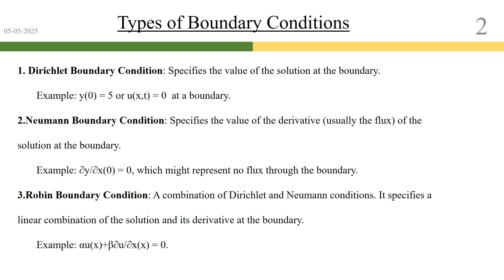Dirichlet condition basically means you have a constant value. When you solve a physical problem numerically, you solve it over a particular domain called the solution domain, and on certain grid points you define the values known as boundary conditions. If you define a constant value at a particular location of your solution space, that becomes your Dirichlet boundary condition. For example, y(0) = 5, meaning at x = 0 the value of y is 5, and this 5 is a constant value.